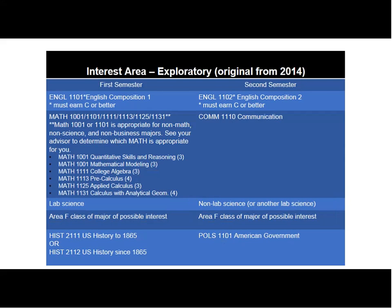Moving on to the exploratory map — this one was a little more difficult to develop. It was a more positive wording of the undeclared major: somebody who truly had no idea what they wanted to major in. We listed all the math courses, both English classes, and mostly classes that would apply to any major. Toward the bottom, we noted an Area F class of their choosing — so if someone was interested in a science major, they could choose something from biology, or an Area F class that might apply to criminal justice or psychology in the spring semester.